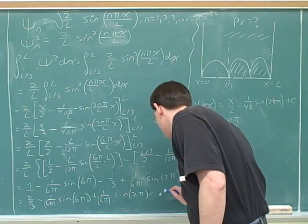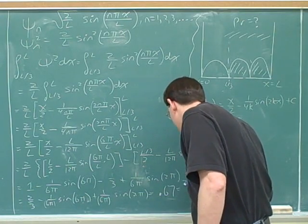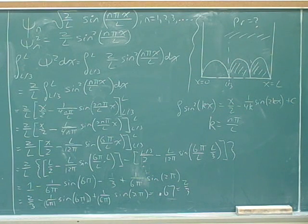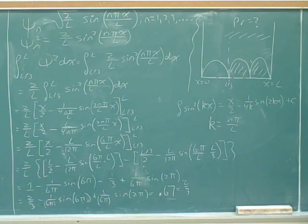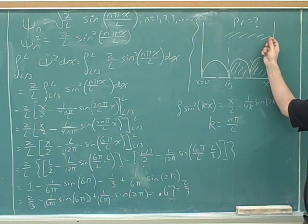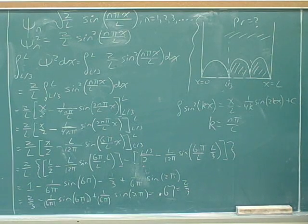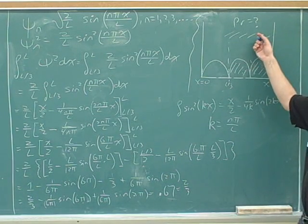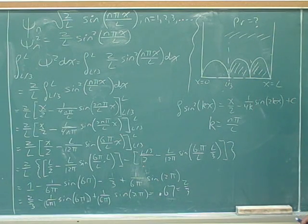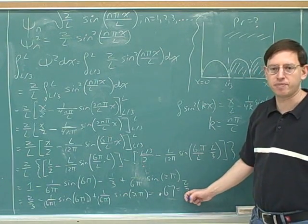So it should come out as 0.67, or two thirds. The answer to the question is 0.667, or two thirds probability. Remember, what was the question asking? They were asking what's the probability that the particle would be found in this portion of the box. Let's think about the intuition here — this is two thirds of the box.